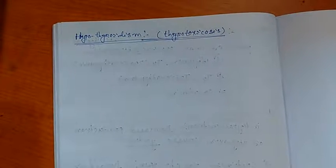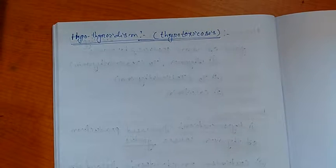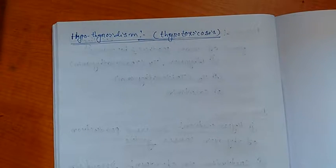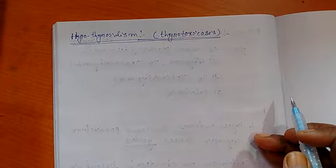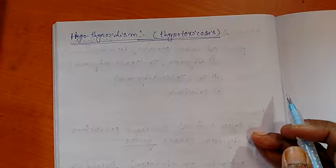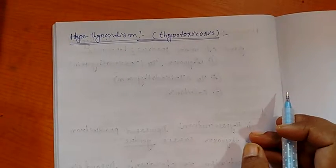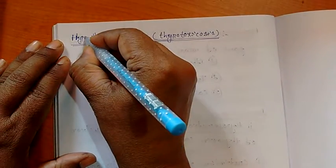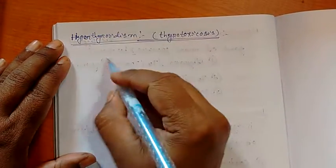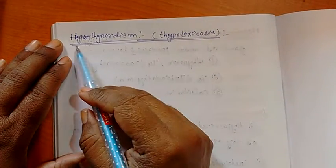I am again with a video that is thyroid gland. In my last video, I have discussed about the hyposecretion of thyroid hormone that is thyroxine and causes which disease that is cretinism in children and myxoderma in adults.